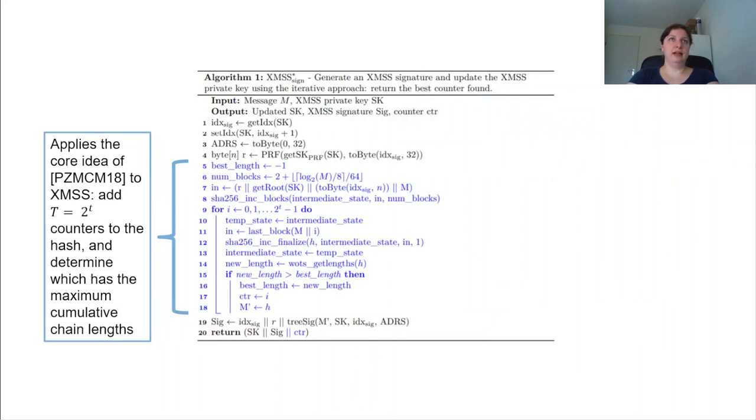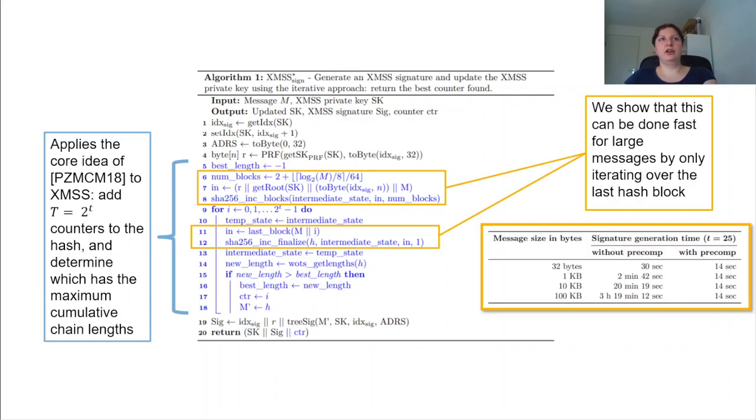So first the XMSS adapted algorithm, which is shown here in the middle and an algorithm one in the paper. I won't go through this in detail, but I will just highlight that this block in blue, that's where in the algorithm we apply the core idea of PZMCM18 to XMSS. So we add these T counters to the hash and determine which of these counters results in the best values and the best time or the lowest time for a verifier.